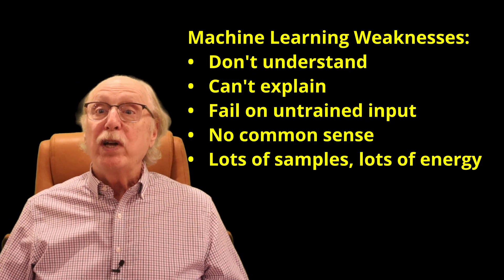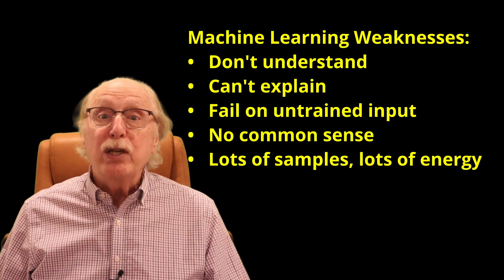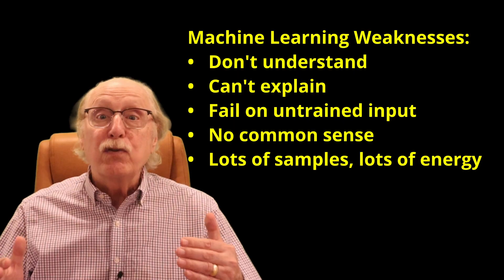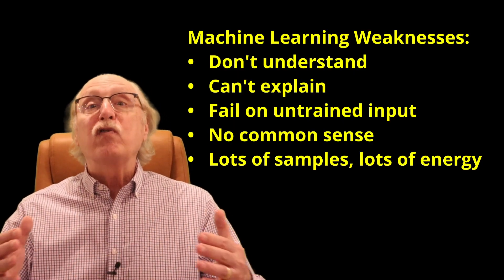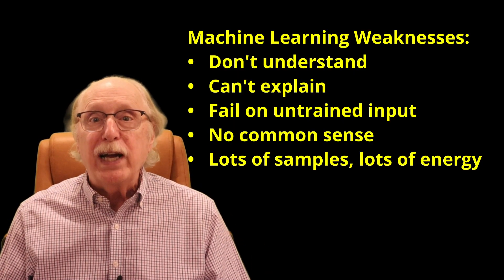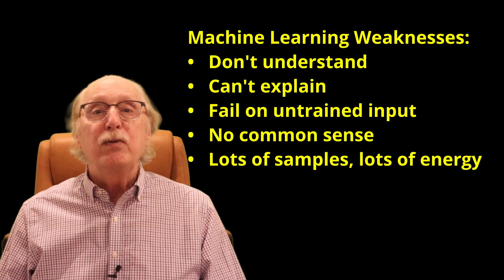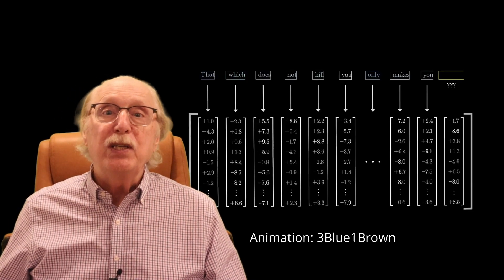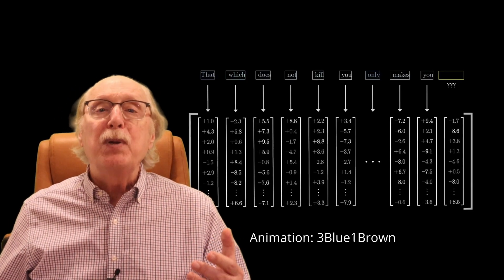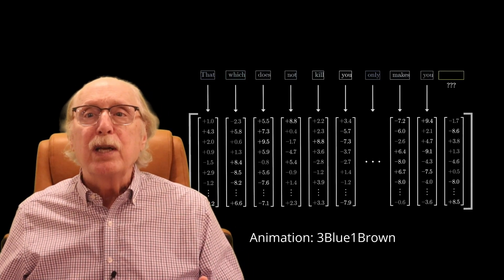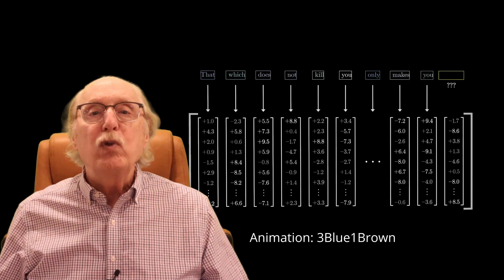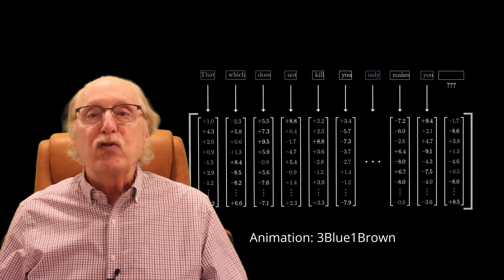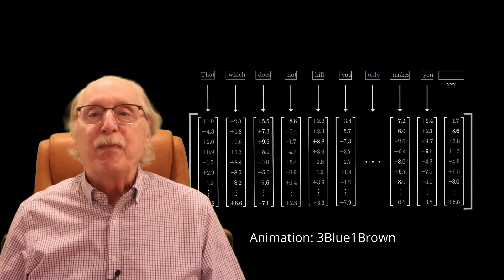Once trained, a machine learning model is frozen until retrained from scratch or fine-tuned. Likewise, large language models like ChatGPT can give the appearance of thinking because of their truly vast training sets.